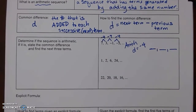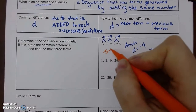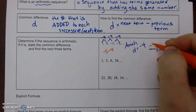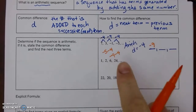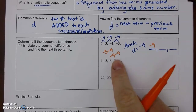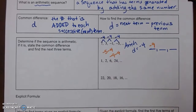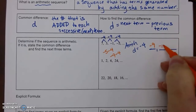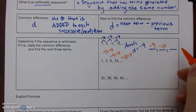Taking -5 minus 4 gives -9, then -9 minus 4 gives -13. You can show this work on your assignment since the answers are provided — this is all you need to show the teacher that you understand how to find the requested terms.